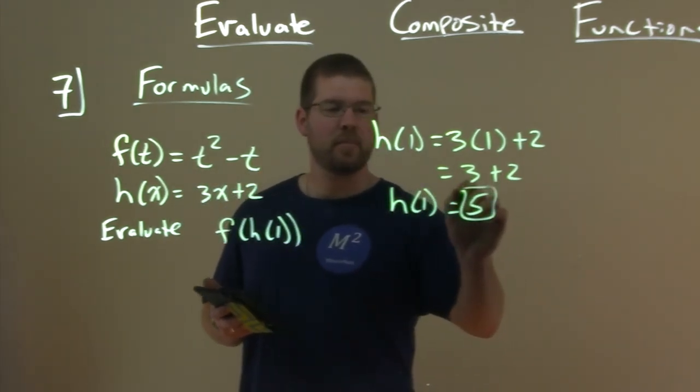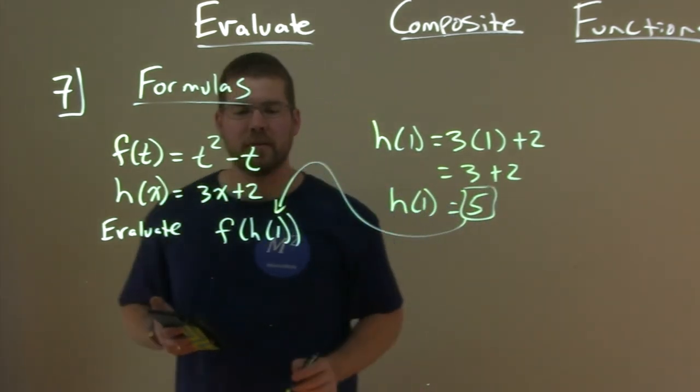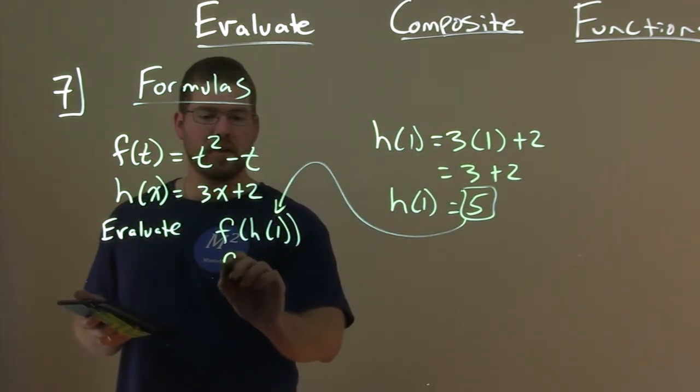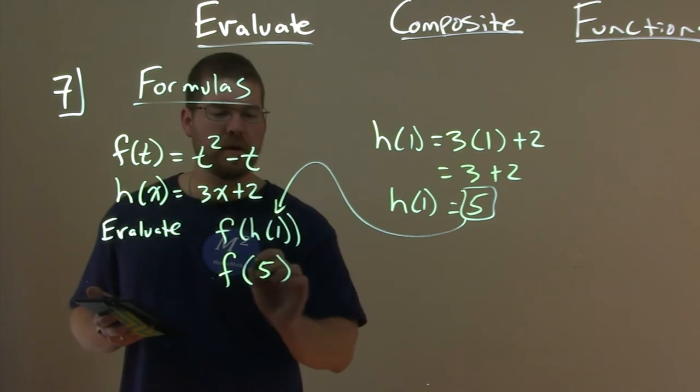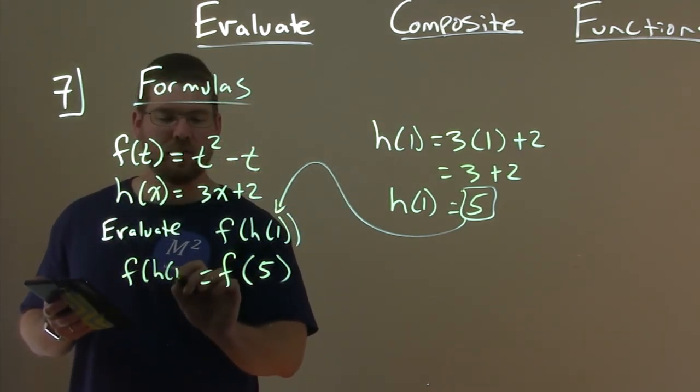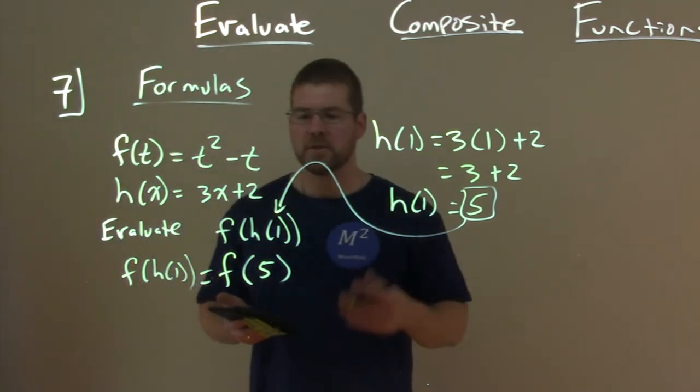We then take that output, and we're going to plug it in for that input, the whole h of 1. We already found that, right? So now we want to find what's f of 5, because f of 5 is equal to f of h of 1, right? So what's f of 5?